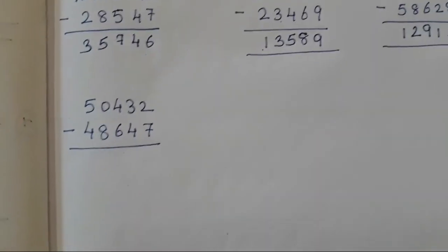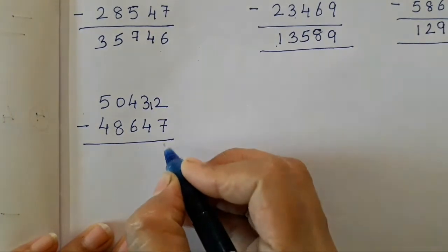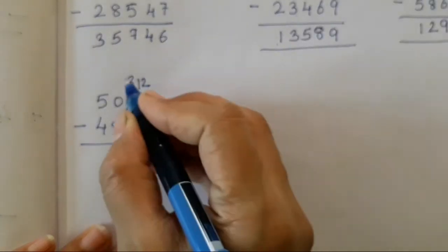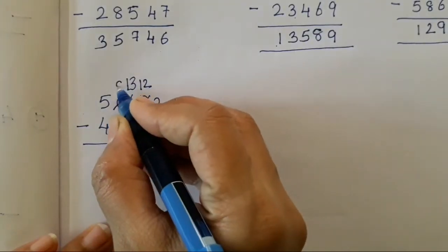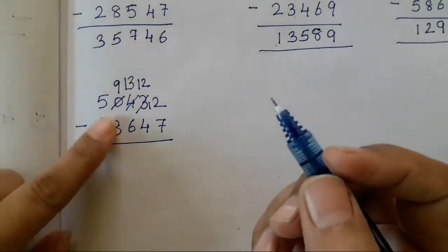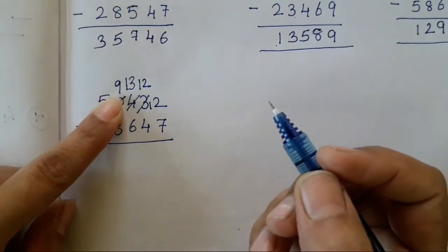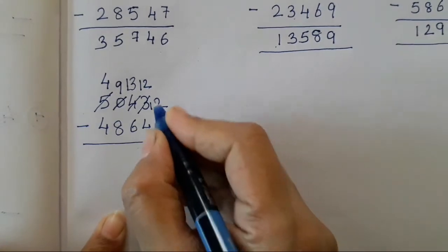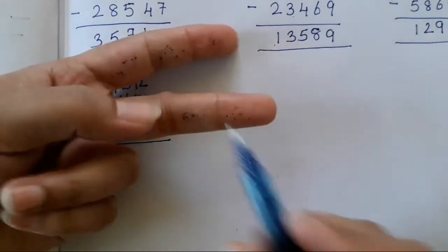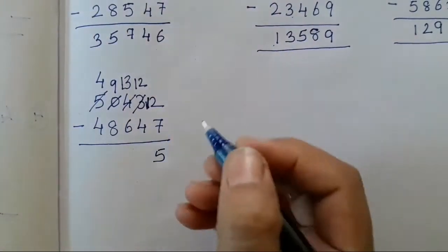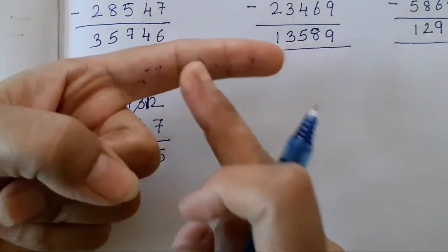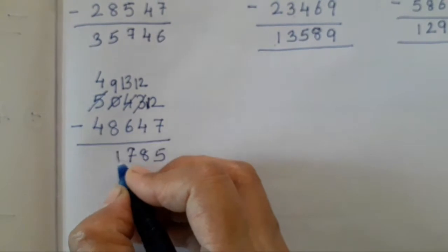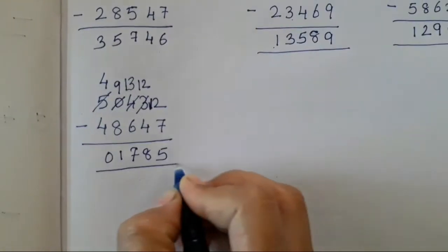Now let's move on to this number. We get 12, then 2. 1 from 4, so 3. 3 minus 6 cannot be done, so 1 we have borrowed from 0 — so this value is going to change to 9. As I said, whenever you are taking 0 as value 9, you have to reduce the other number also — so this is 4. Count from 7 till 12: 8, 9, 10, 11, 12 — that's 5. 12 minus 4 is 8. Count: 6, 7, 8, 9, 10, 11, 12, 13 — the answer is 7. 9 minus 8 is 1. 4 minus 4 is 0.